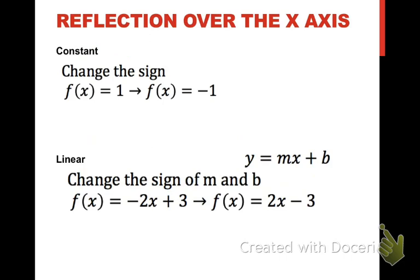If I'm going to do reflection over the x-axis, this applies to all four parent functions. So first of all, for the constant function, it's the same thing really as moving it down. You're just changing the sign. So if it was a 1, you change it to a negative 1. If your constant function was f(x) = 10, you change it to a negative 10.